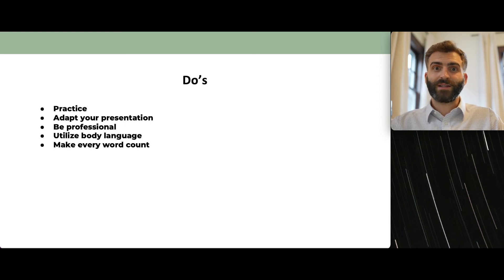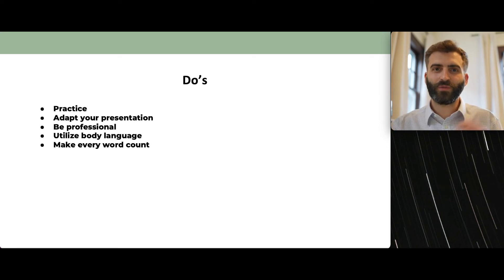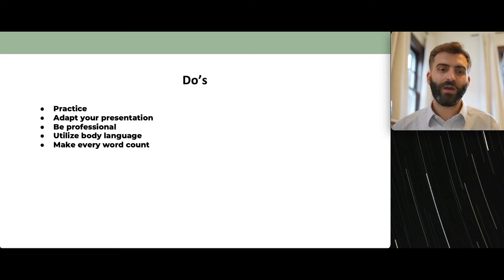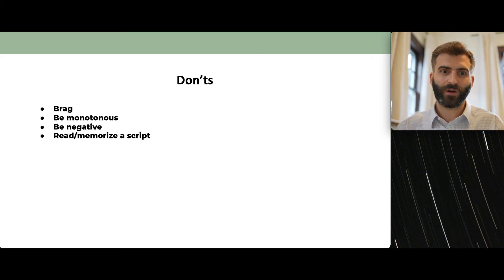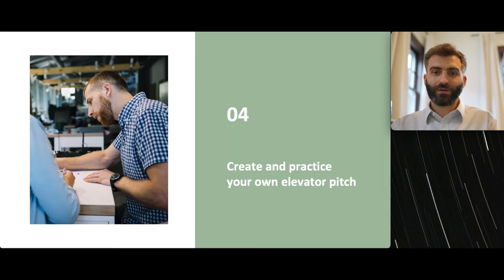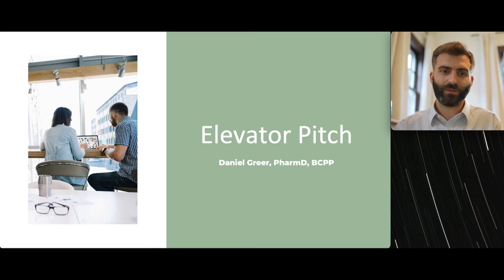To summarize: the do's are to practice, adapt your presentation based on audience, lean toward being more professional, utilize body language to your advantage, and make every word count. The don'ts: don't come across as braggy or arrogant, don't be monotonous, don't be negative, and don't read or memorize a script. The final component of this presentation is to create and practice your own elevator pitch. I hope this information was helpful — thank you so much for watching.